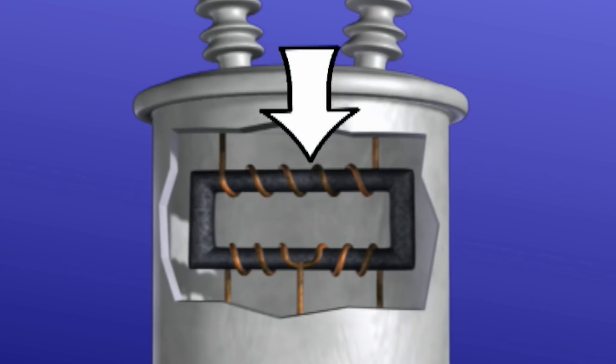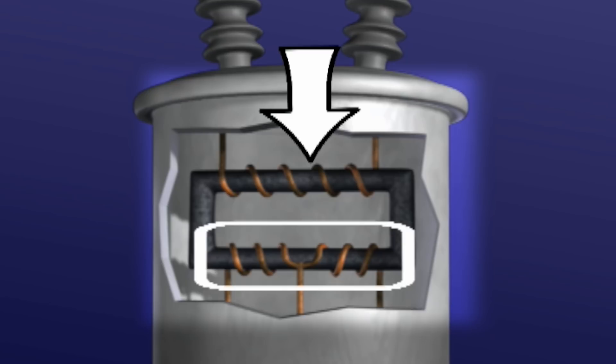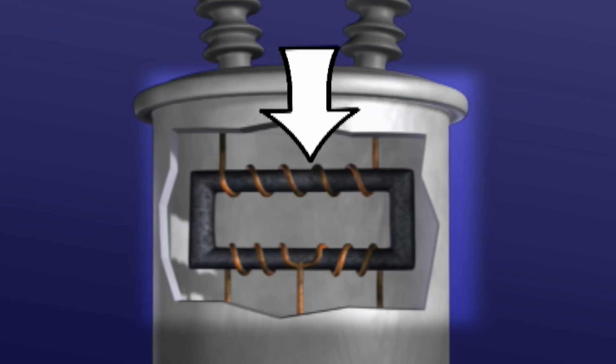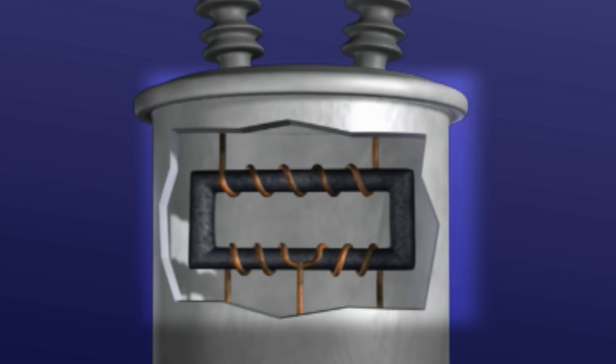When a source voltage is applied to the primary winding, the resulting current flow creates a magnetic field. The magnetic field cuts across the secondary winding, inducing a voltage. The ratio between the number of turns in the primary winding and the number of turns in the secondary winding determines the value of the secondary voltage that a transformer can supply to a load.